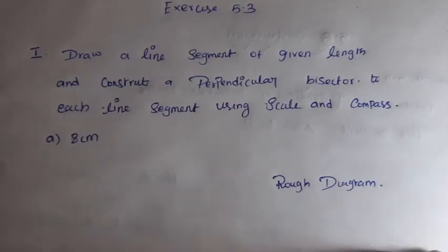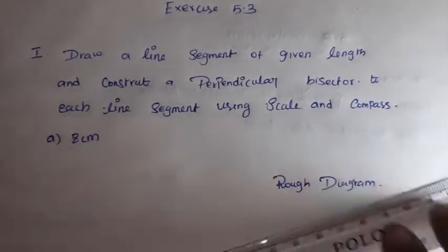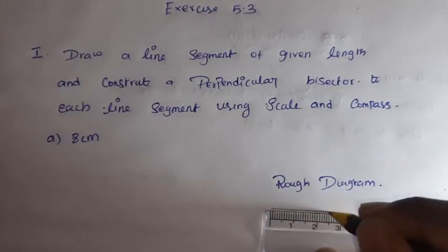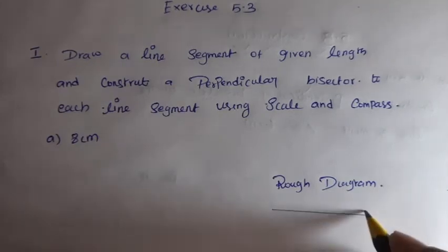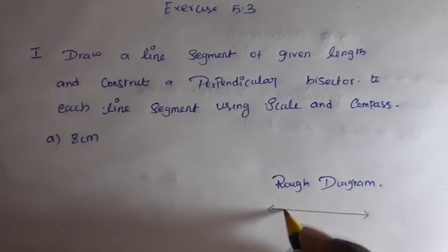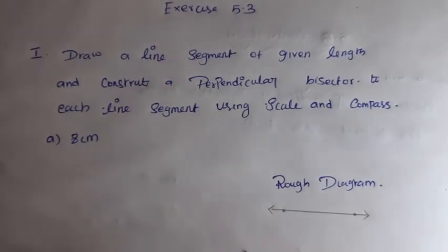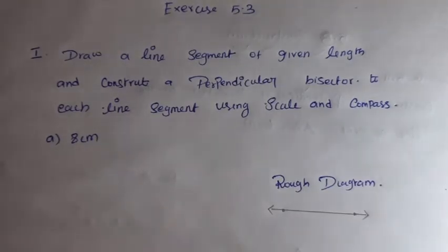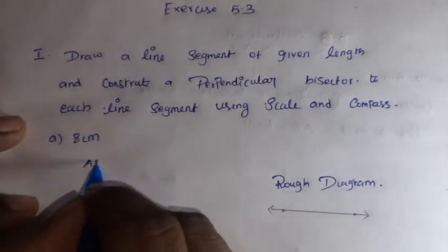First somebody, yes. So what is given? 8 centimeters is given. So first I'm going to draw a line. Just draw a line. I'm going to draw the line. Mark a dot. I'm going to name it, so the name I'll call A.